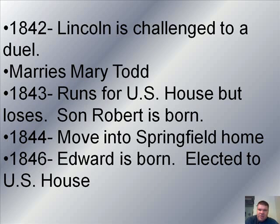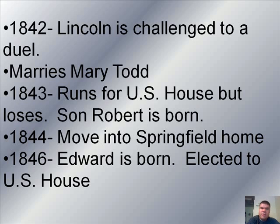In 1842, Lincoln is challenged to a duel — that old thing where two men would line up back to back, each with a pistol, walk 10 or 15 paces, turn and shoot. This doesn't happen; Lincoln is able to smooth things over with the person that challenged him. That same year, he also marries Mary Todd. The next year, he runs for the U.S. House, but he loses. That same year, his son Robert is born.